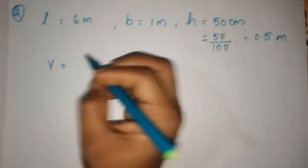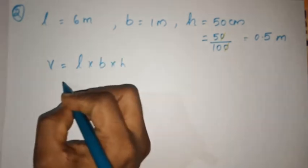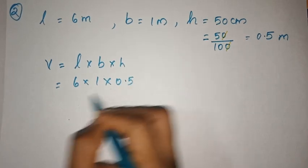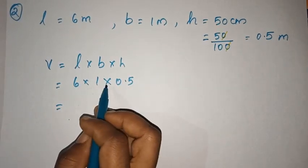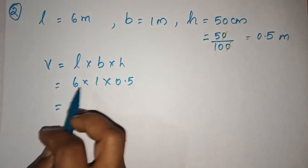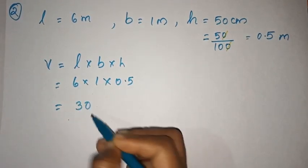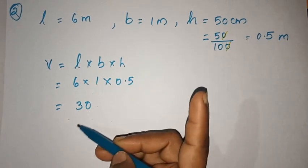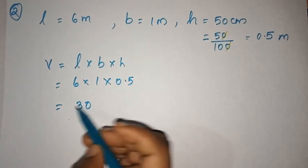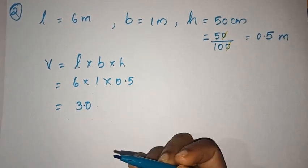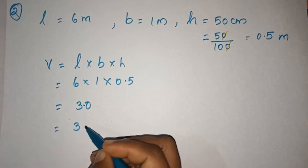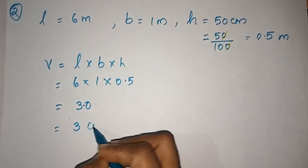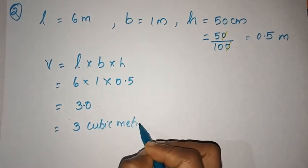Volume is equal to length into breadth into height, which is 6 into 1 into 0.5. That gives us 3.0, so the volume is 3 cubic meters.